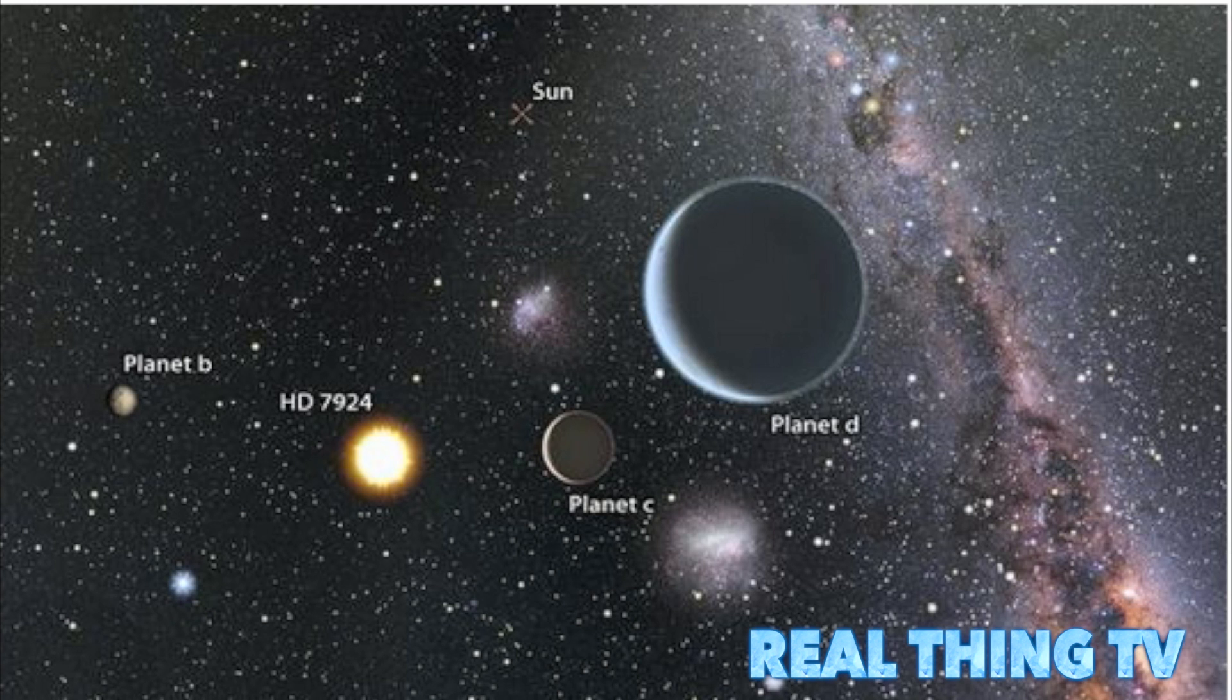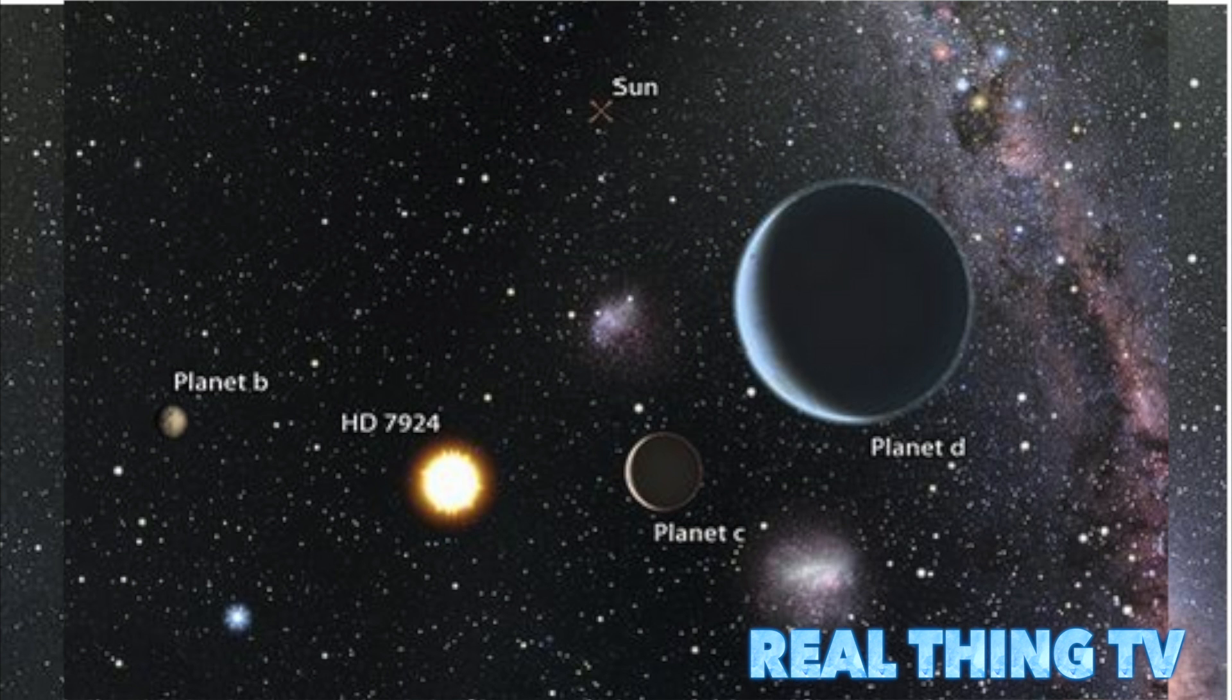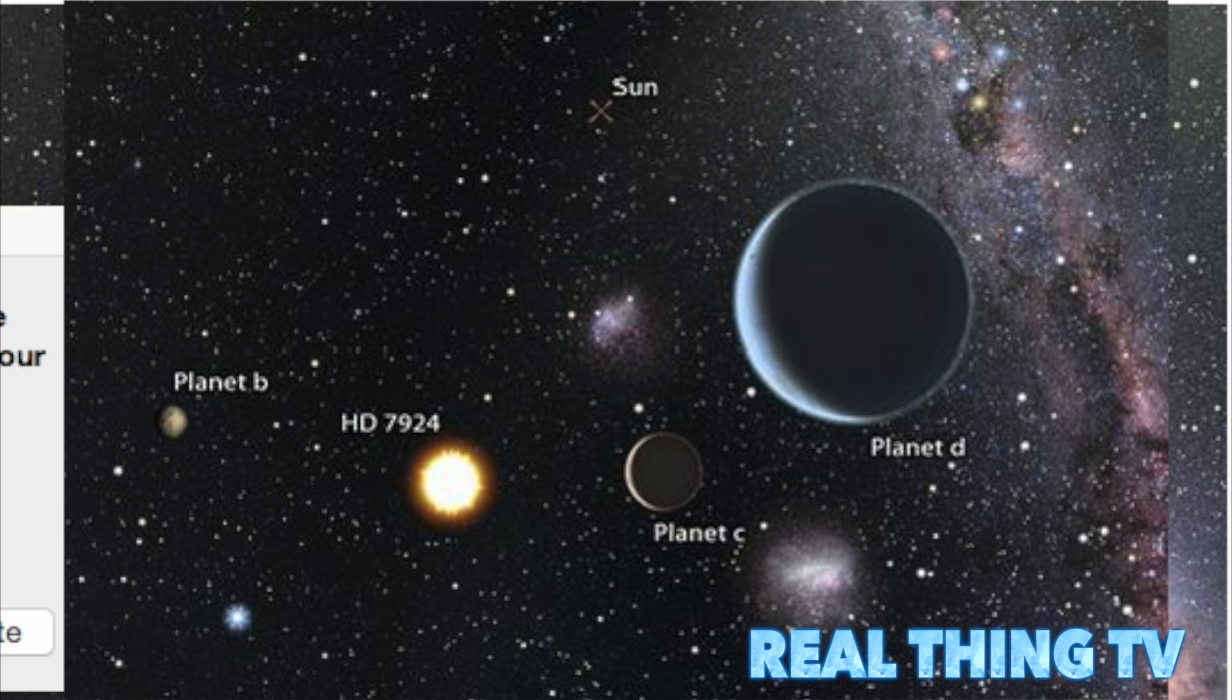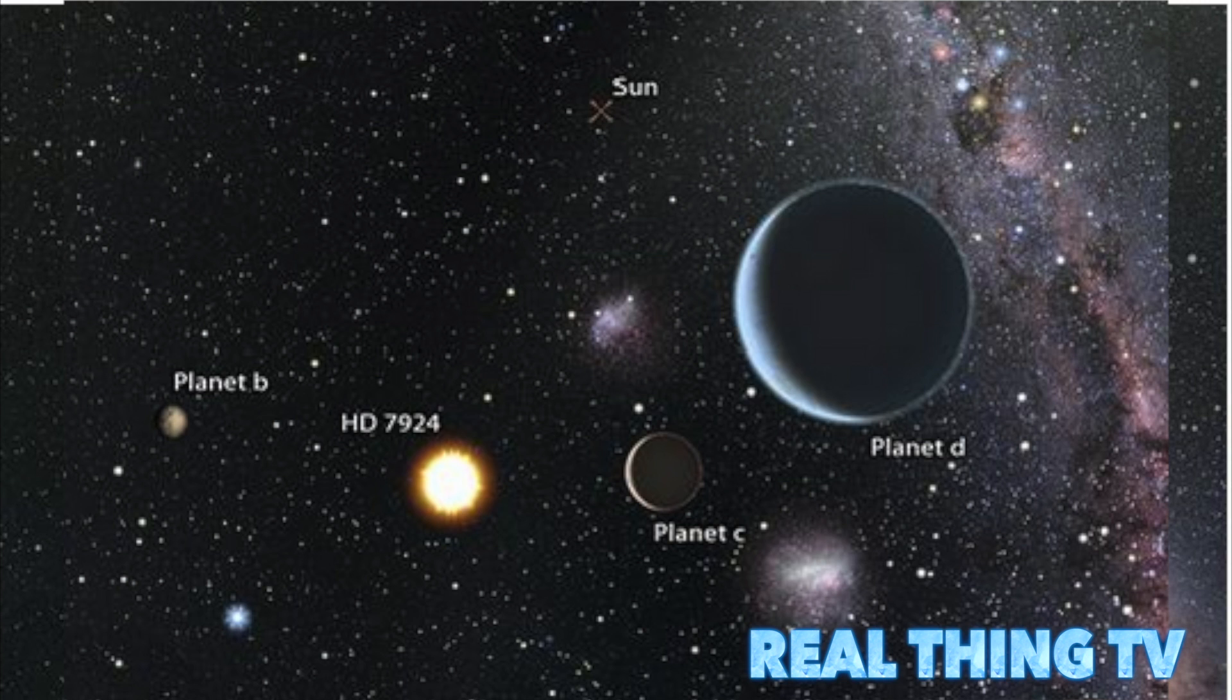The three planets are unlike anything in our solar system, with masses 7 to 8 times the mass of Earth and orbits that take them very close to their host star, said study co-author Lauren Weiss, a graduate student at the University of California, Berkeley, in a statement.